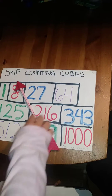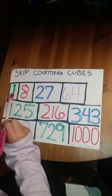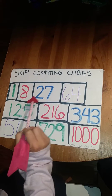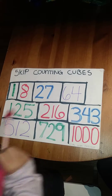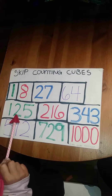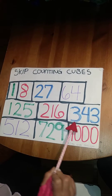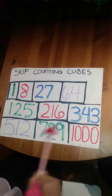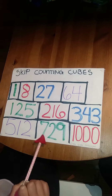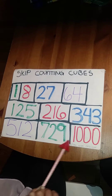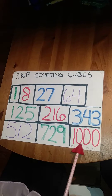Skip counting the cubes. 1, 8, 27, 64, 125, 216, 343, 512, 729, 1000.